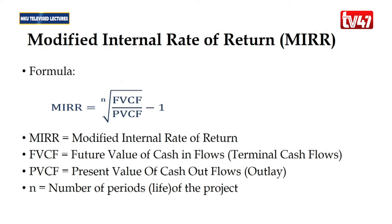The MIRR formula involves the future value of cash inflows (the terminal cash flows) divided by the present value of cash outflows (the outlay), raised to the power of 1/N where N is the number of periods, minus 1. This gives the modified internal rate of return. You accept the project if MIRR is higher than the cost of capital.